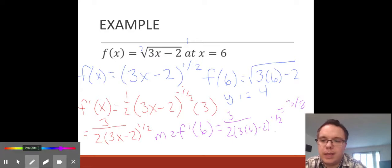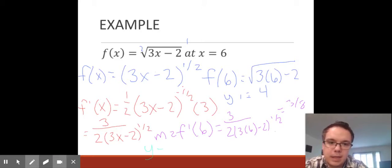Our equation is going to be y minus our y₁, which is 4, equal to our slope, which is 3/8, times x minus our x-value, which is 6. So our equation is y - 4 = 3/8(x - 6).